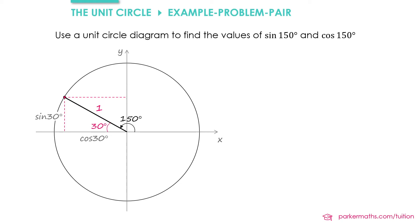And so we can use the values of sin and cos 30 to help us find the values of sin 150 and cos 150. So keep in mind that cos 150 is the x coordinate of the point on our circle, and sin 150 is the y coordinate of the point on the circle.